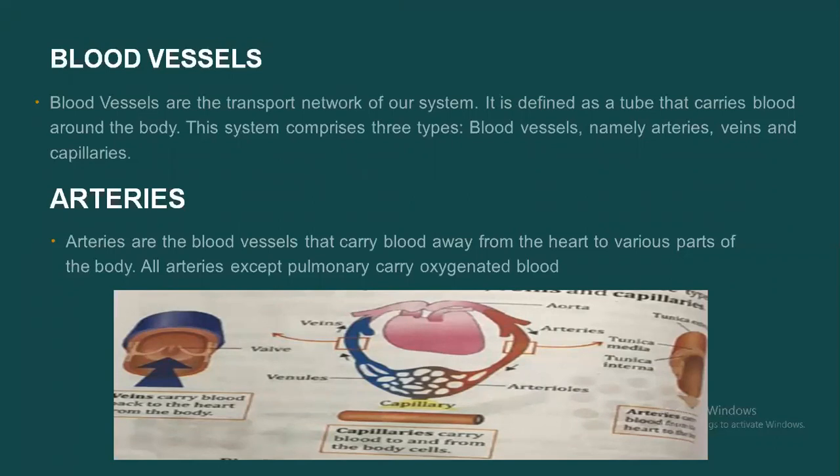The walls of an artery are made up of three layers, as you can see in the diagram: tunica externa, tunica media, and tunica interna. Tunica externa, the outermost layer, consists of elastic tissues. Tunica media is made up of muscles. Tunica interna is made up of single-layered endothelium.